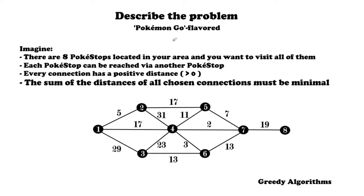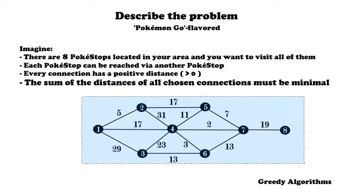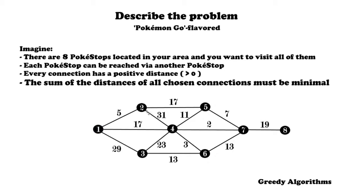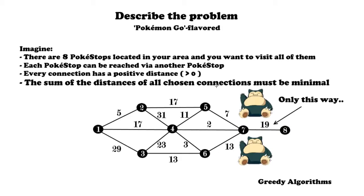This description of the problem is a bit Pokemon Go flavored. Imagine this: there are 8 Pokestops located in your area and you want to visit all of them. Each Pokestop can be reached via another Pokestop, and every connection has a positive distance — a distance greater than zero. The most important thing is that the sum of the distances of all chosen connections must be minimal. In case you're wondering why there's only one path from Pokestop 7 to Pokestop 8, that's because there are two Snorlaxes on the way.